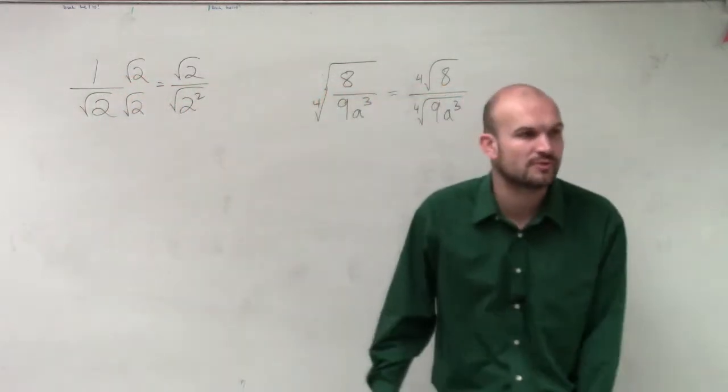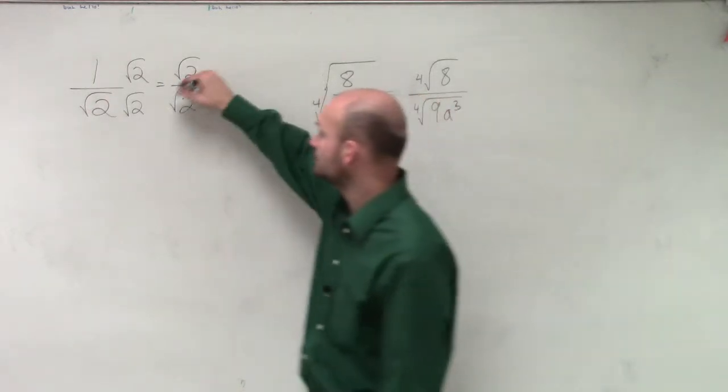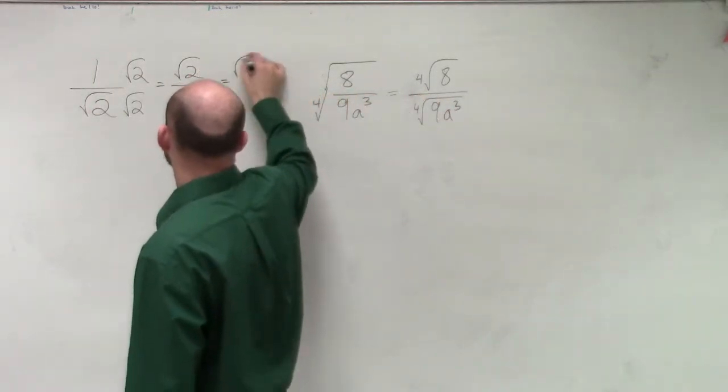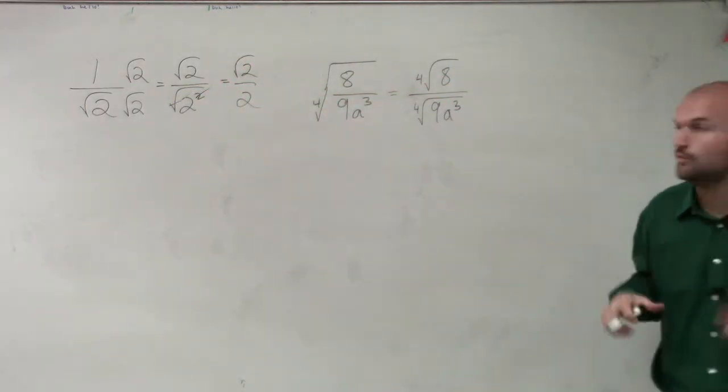Well, what happens when you take the square root of 2 squared? You get 2, right? You don't have a square root anymore. OK? So therefore, you're not dividing by an irrational number, which is cool.